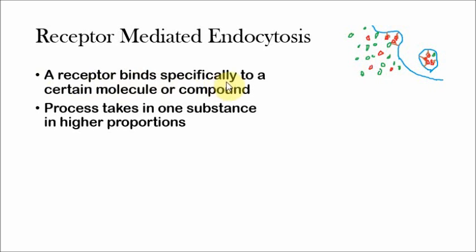These receptors bind specifically to a certain molecule or compound. In this case, the little red molecules as opposed to the green ones. And by doing so, it allows this process to take in one substance in higher proportions. Notice, though, that it will still take in a small amount of all other substances. It's not a perfect process.